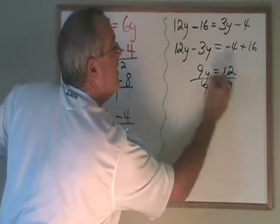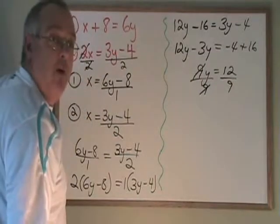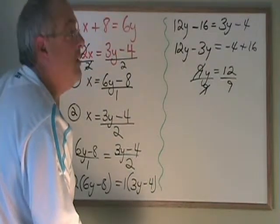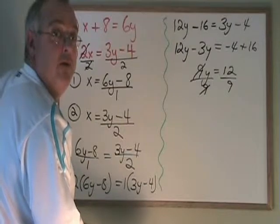And dividing both sides by 9, I cancel. My y is isolated. It's equal to 12 over 9, which reduces to 4 thirds.